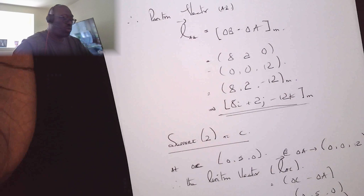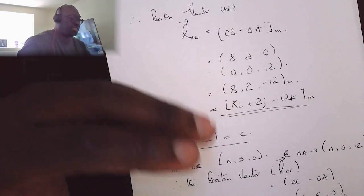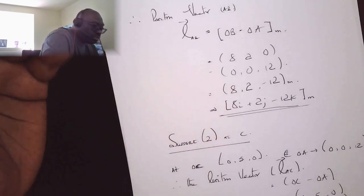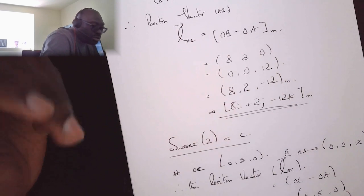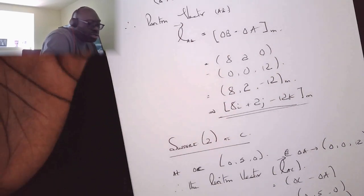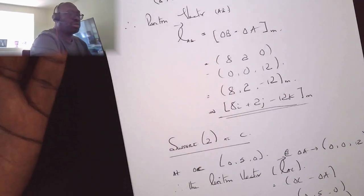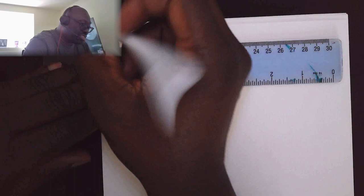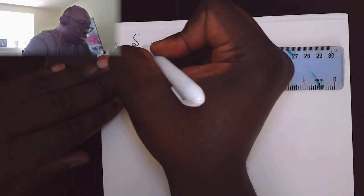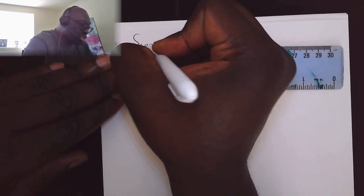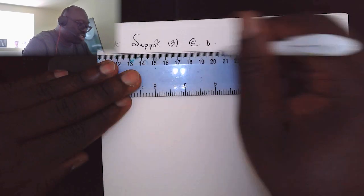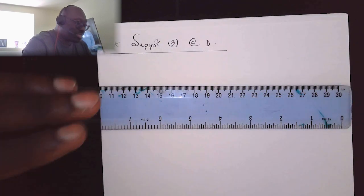So we've established C. So we're going to do likewise for D or support three. So at support three at D, let's bring our diagram again, our vector diagram again. So where is D? D is along X and it's negative, it's in the negative direction. So that would be minus two point five meters. In terms of Y, there is no progression in terms of Y, there's no progression in terms of X and Z.